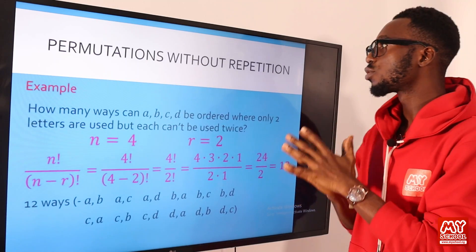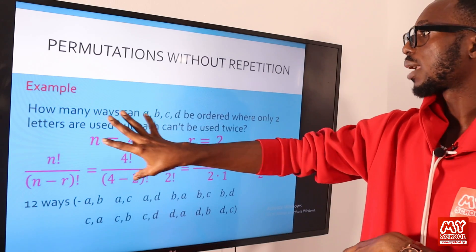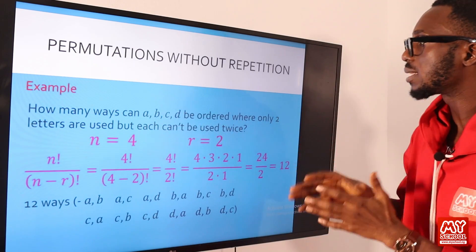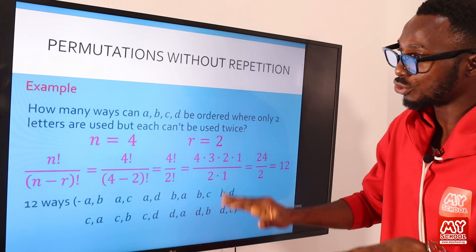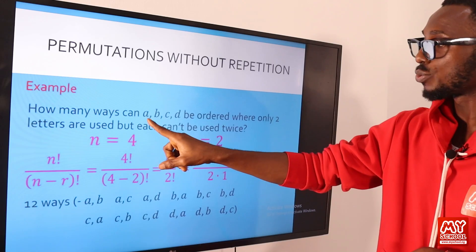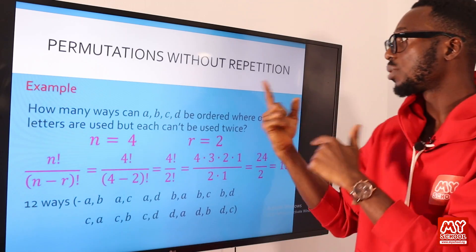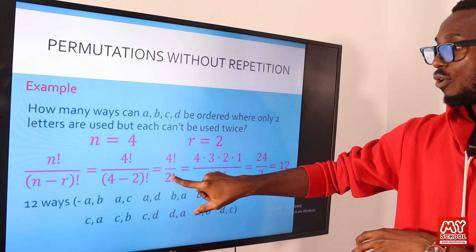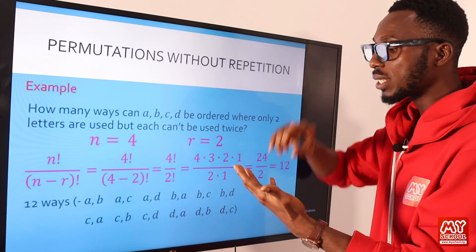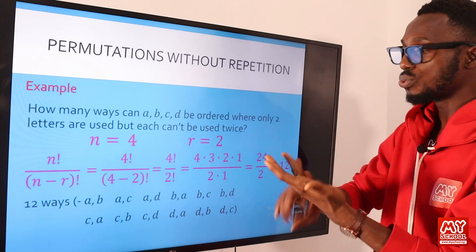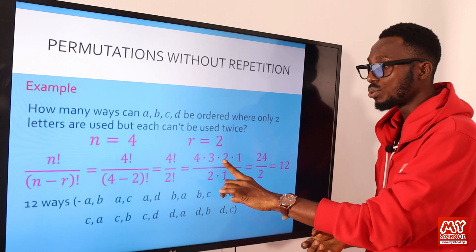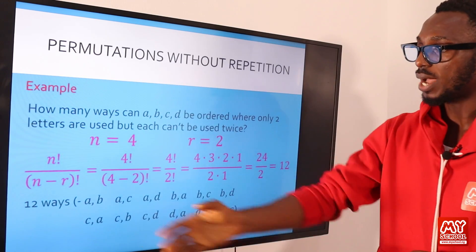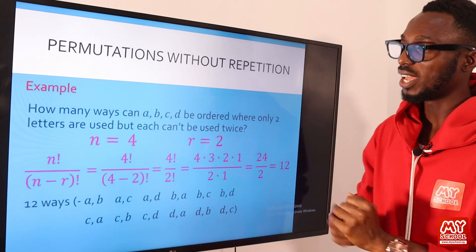For permutations without repetition, consider the example: how many ways can A, B, C, D be ordered where only two letters are used, but each letter can't be used twice? The total number of letters is four; we are choosing two without repetition. So we have four factorial over two factorial. Four factorial is 4×3×2×1 = 24, and two factorial is 2×1 = 2. Dividing 24 by 2 gives us 12. So there are 12 ways to do this without repetition.